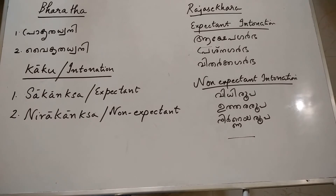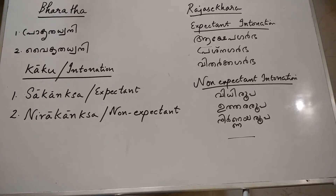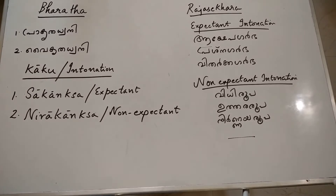Rajashekhar defines Kaaku or intonation as a particular quality in the mode of utterance which brings out the intention of the speaker clearly. It is a peculiar quality in somebody's utterance which clearly communicates the speaker's intention. This is what is meant by Kaaku or intonation according to Rajashekhar.